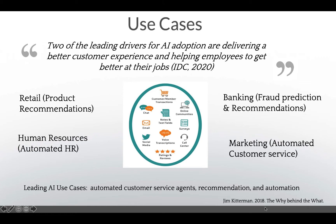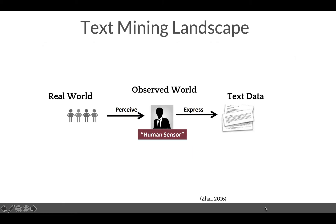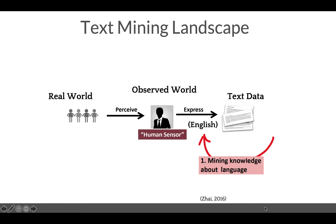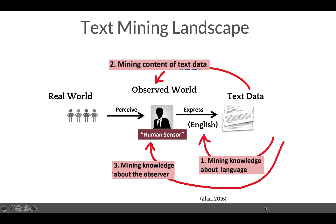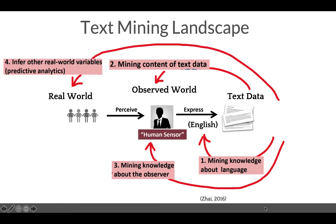How can we get from text data to knowledge and insights about the real world to help companies compete? We as human sensors express our perception of the real world. Our expressions or utterances — written or audio recordings — provide information about language. It could be a customer's origin or sometimes a customer's social level. Through textual data we can identify the context of the observed world, mine knowledge about the observer and the customer, and through that we can infer other real world variables, which is predictive analytics.